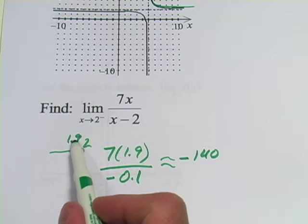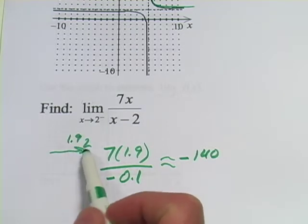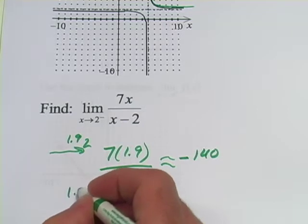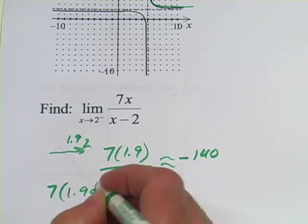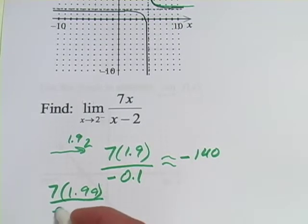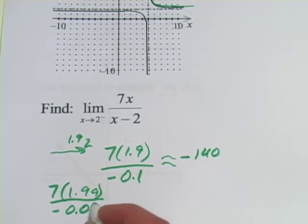Let's try one more, a little bit closer. Let's, instead of 1.9, let's do 1.99. So, 1.99 times 7, that's going to be even closer to 14, so I'm just going to call that 14. And down here, we'll get negative 0.01.